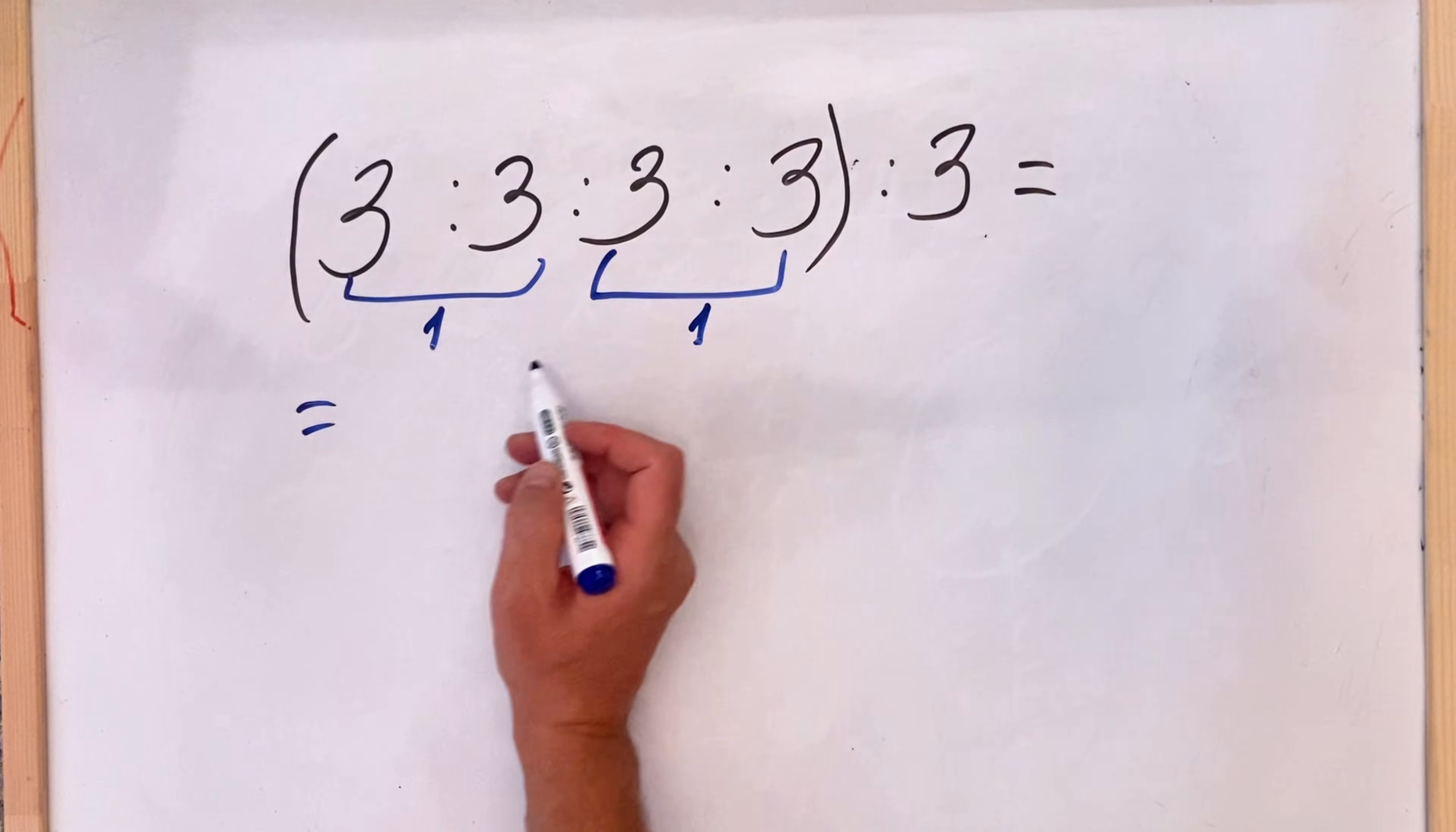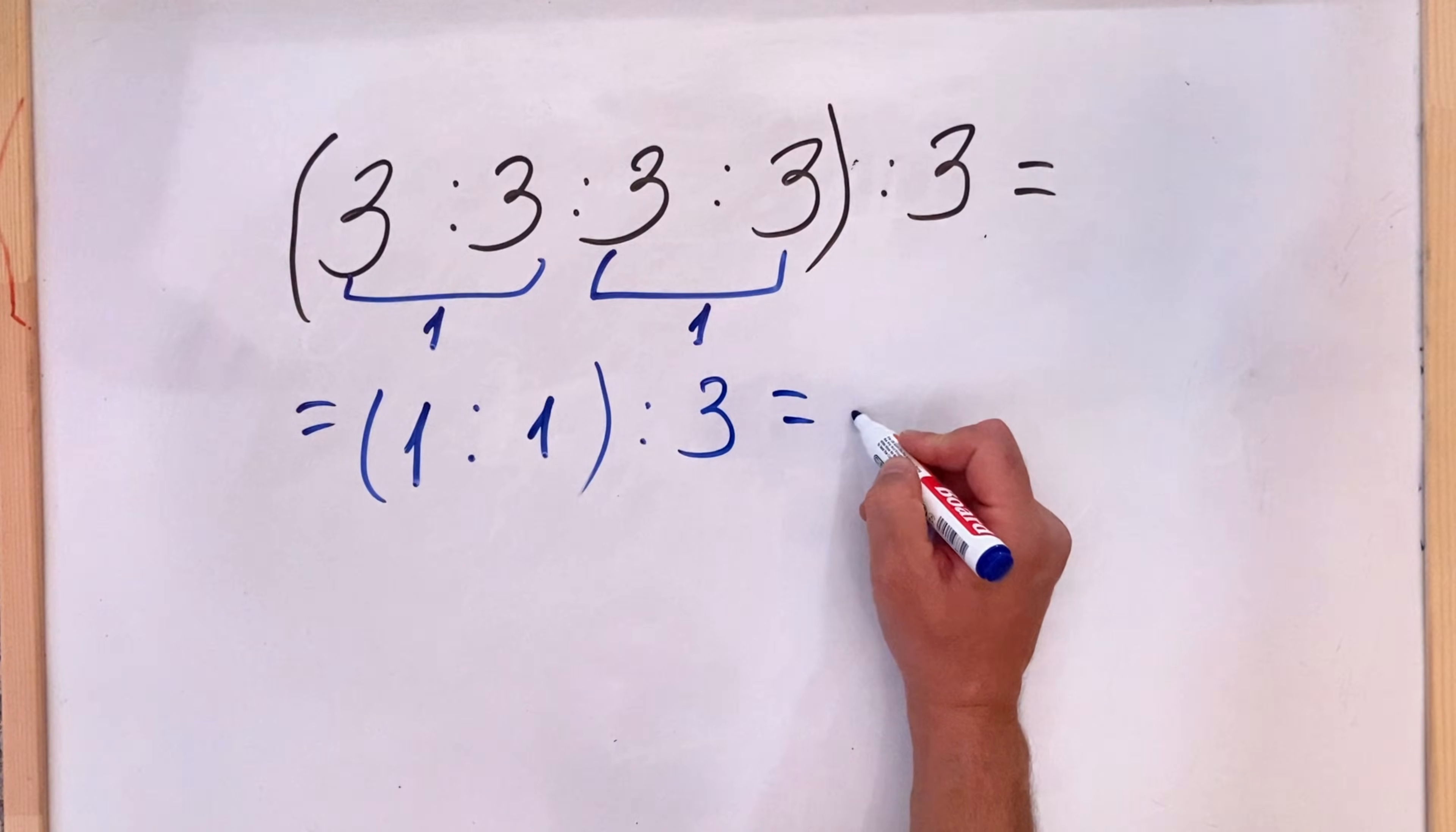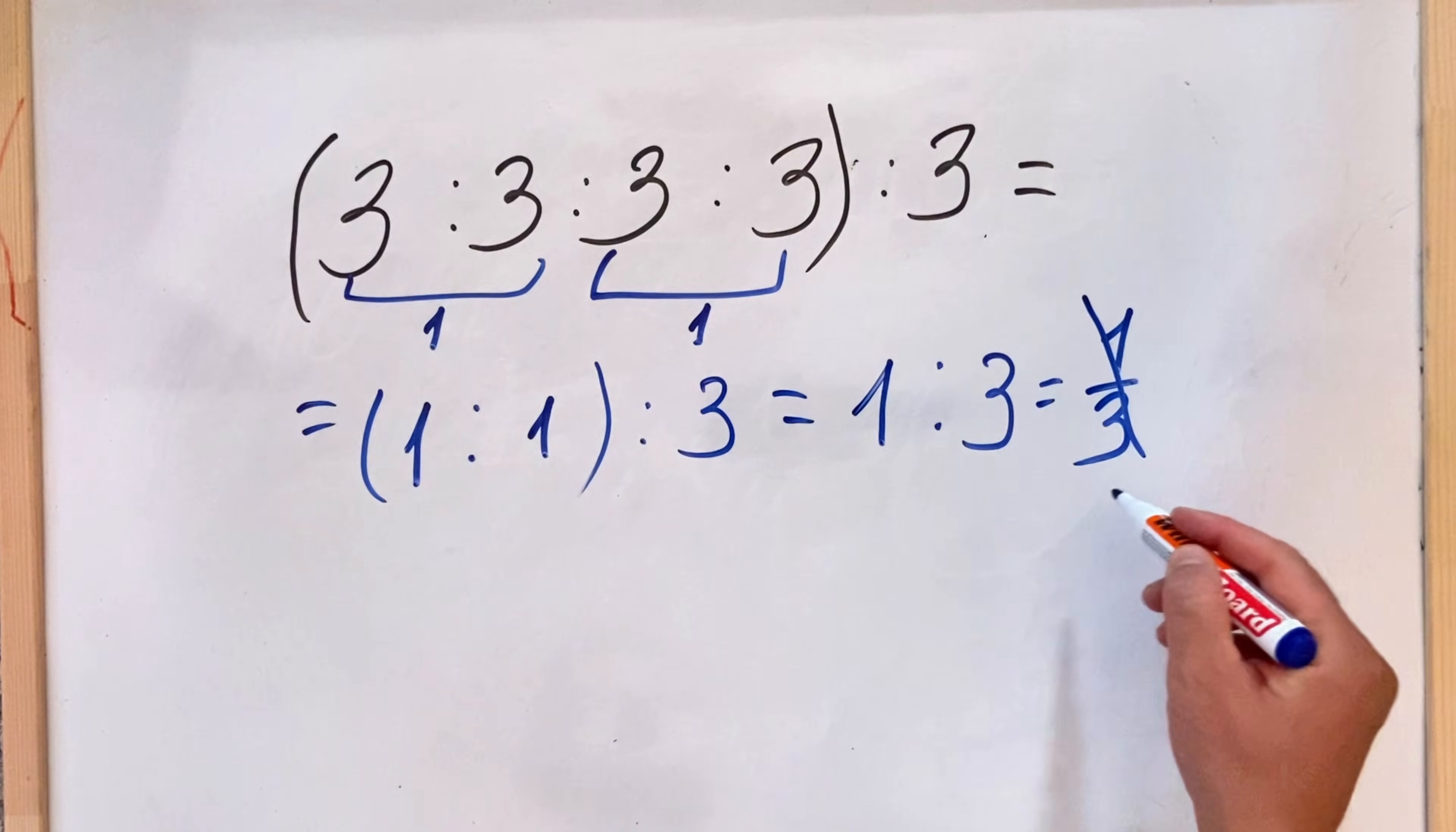So what they have in the end is 1 divided by 1. We can keep the parentheses, divided by 3. So here again, it's canceling. So we have 1 divided by 3, which is 1 third. But this, of course, is incorrect.